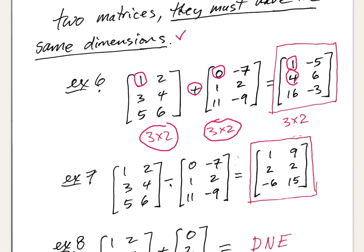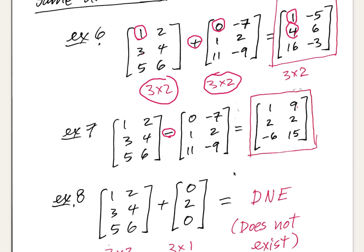For subtraction, the only difference is you subtract corresponding entries. So 1 minus 0 is 0, and 2 minus negative 7 is 2 plus 7, which is 9, and so forth throughout the matrix.